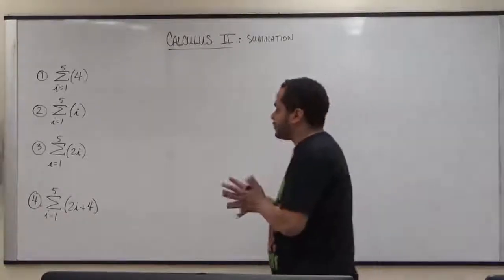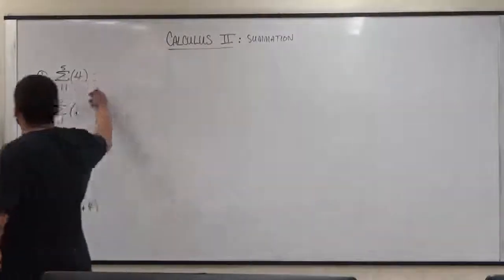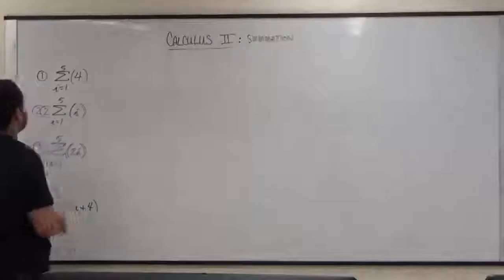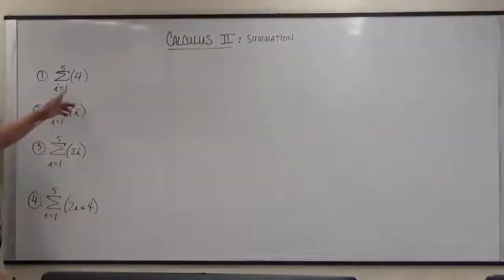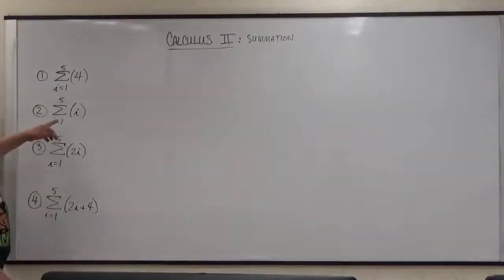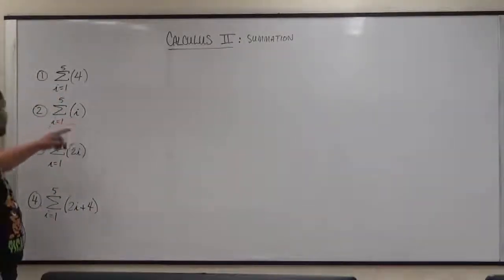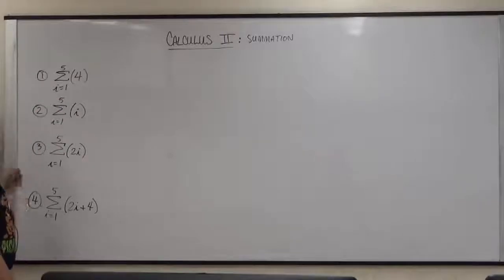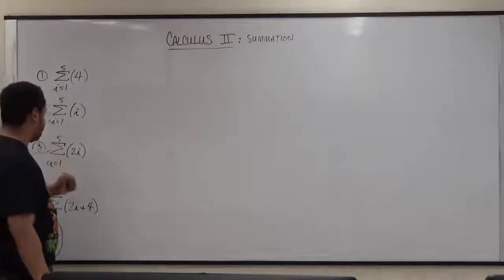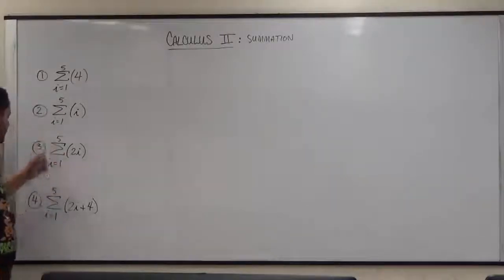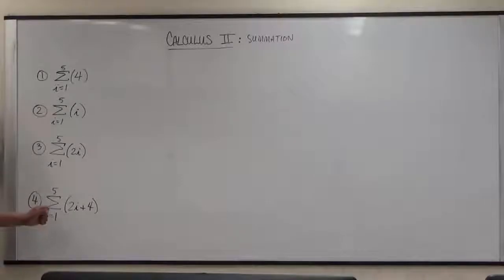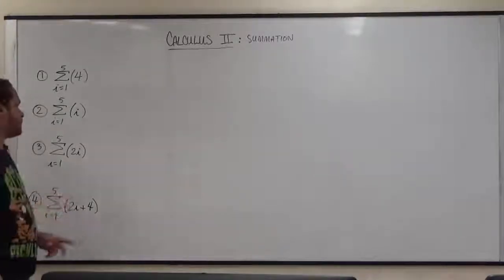So here we have four summation problems. We have the summation of 4 from the values of 1 to 5, we have the summation of i from 1 to 5, the summation of 2i from 1 to 5, and finally the summation of 2i plus 4 from 1 to 5.